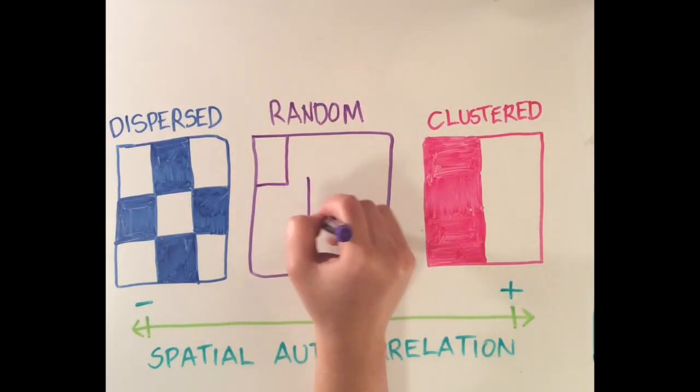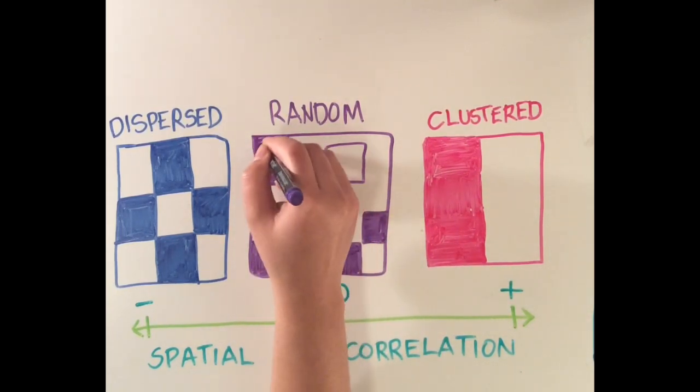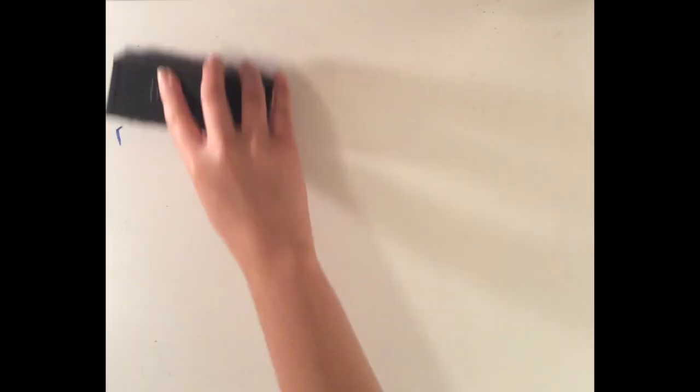A spatial autocorrelation of zero indicates randomness, and that the locations of data points are not related in space.